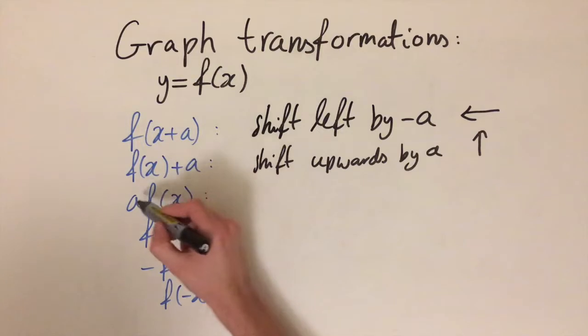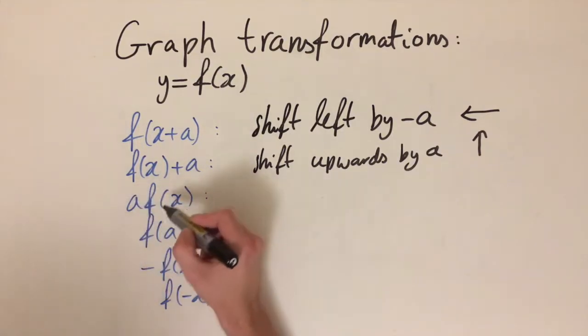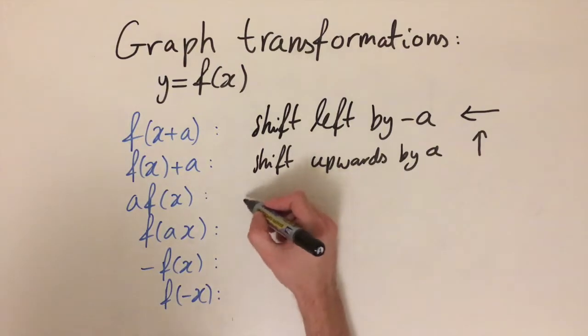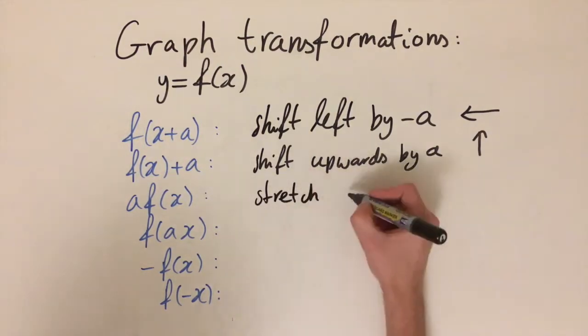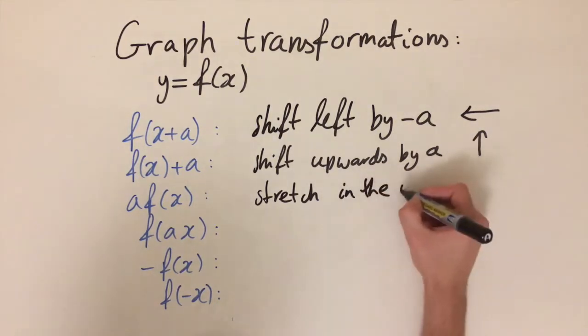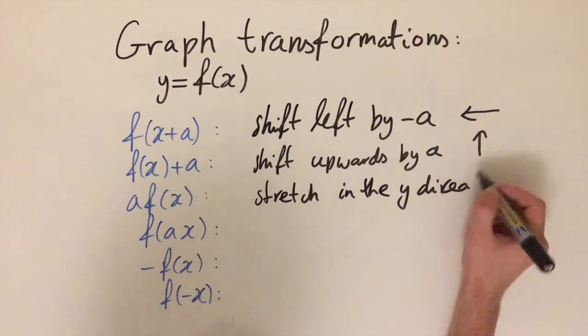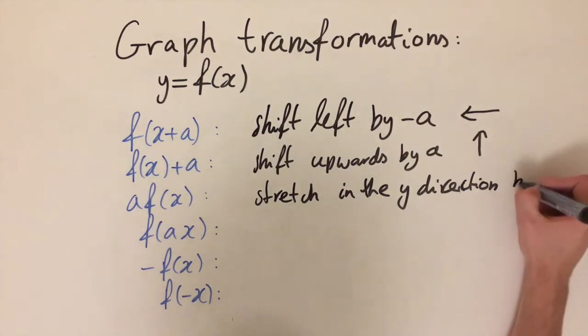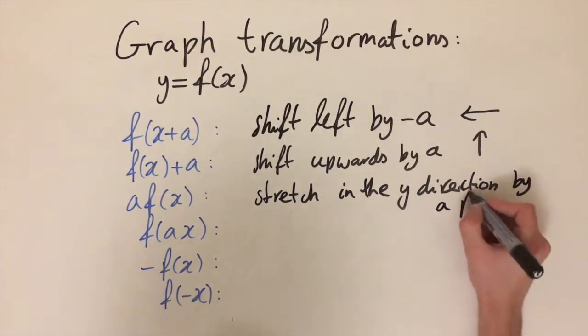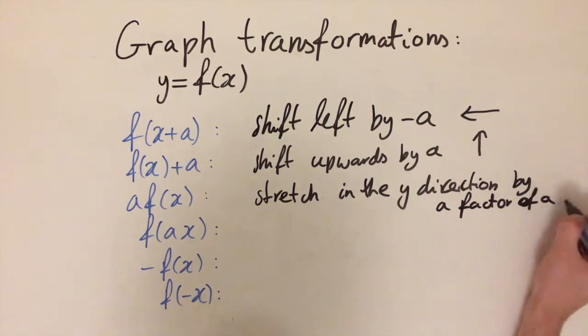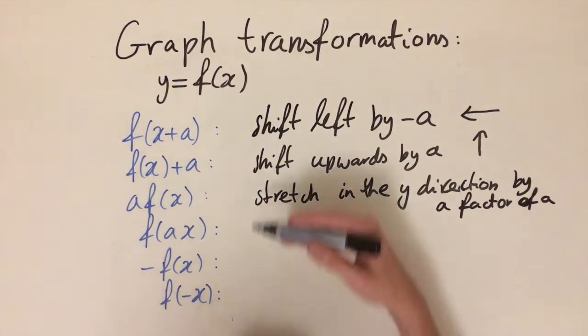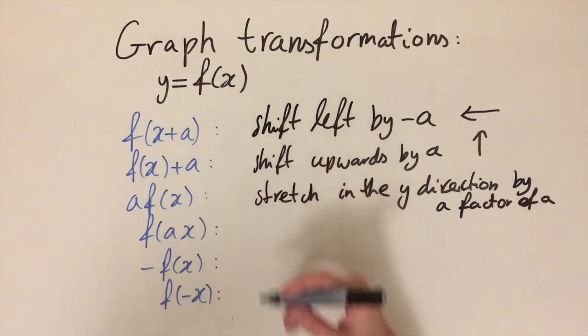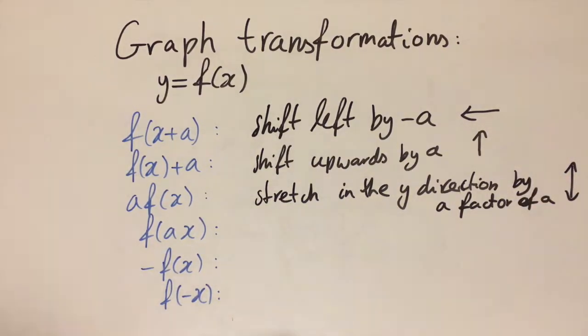Okay, so now if we move a in front of the function, we're now multiplying by a: af(x). Now this is going to correspond to a stretch in the y direction by a factor of a. So if we multiply by number a, we are stretching that function out by a scale factor of a. If a is bigger than one, we are making it more stretched out in the y direction.